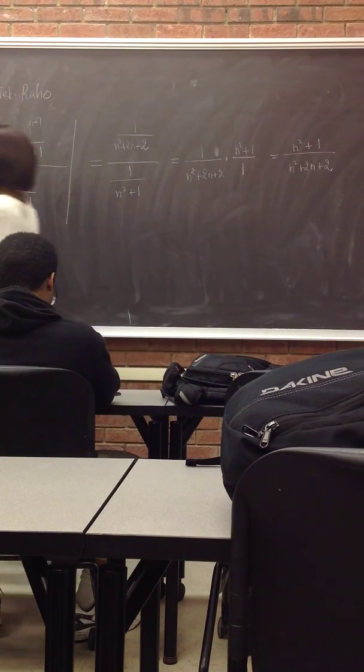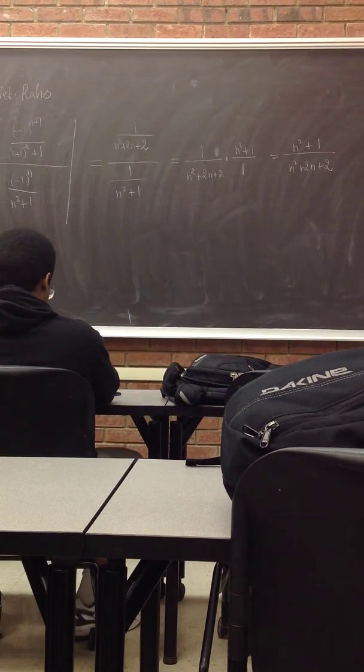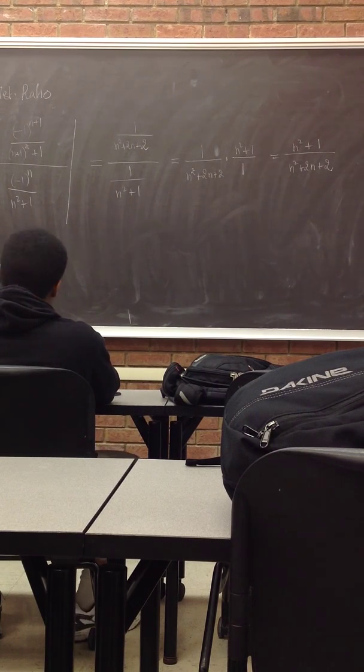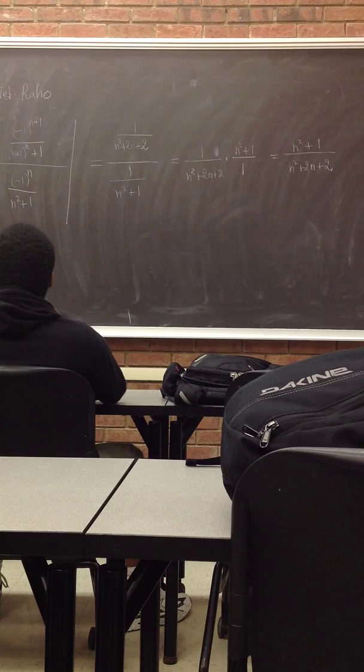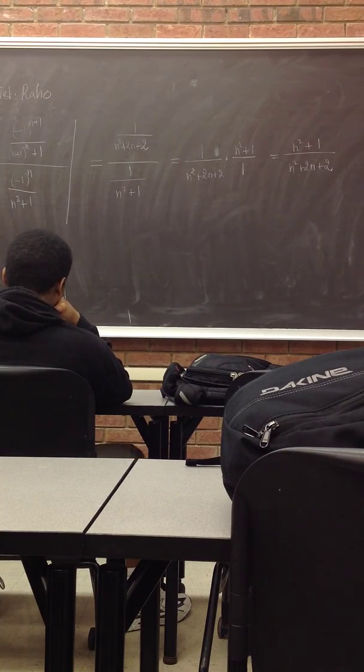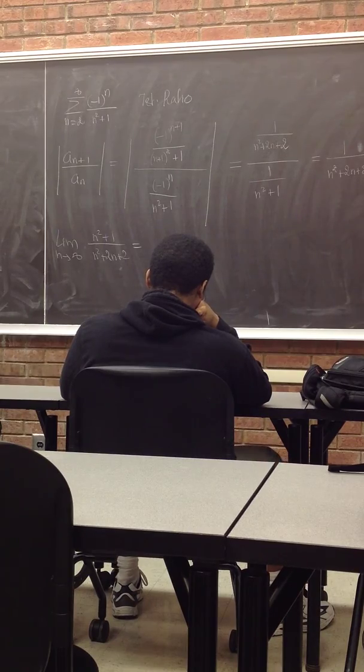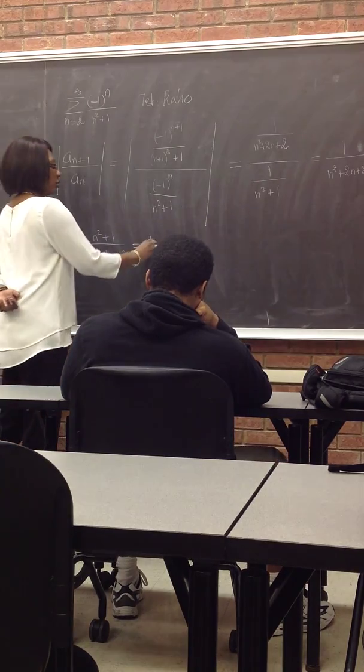Now let's take the limit of this. As N goes to infinity, N squared plus 1 over N squared plus 2N plus 2 goes where? It goes to 1, yeah. The limit is 1.